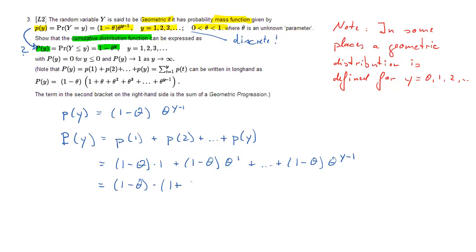Now we can factor out 1 minus theta here to make this somewhat more manageable. We get 1 minus theta times 1 plus theta plus theta squared all the way to plus theta to the power of y minus 1.